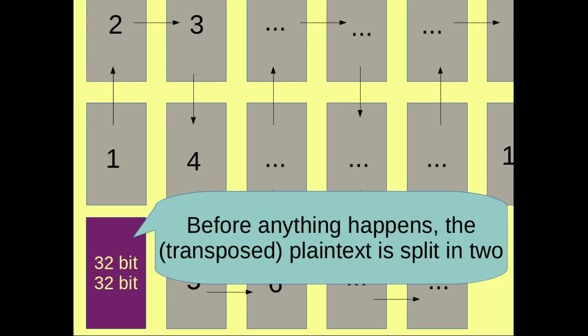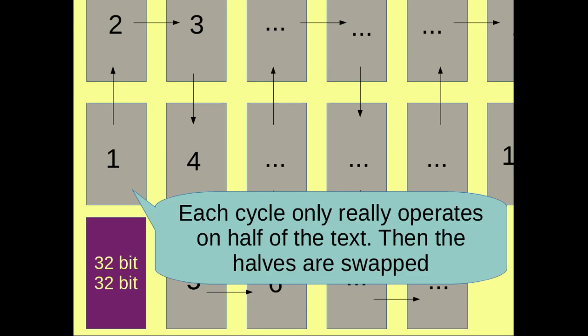First, before anything happens, the transposed plaintext that you're sending in is split into two. So this is the text that you want to encrypt that has been transposed, and that splits into two 32-bit sections. So your 64-bit text becomes two 32-bit chunks. Each cycle only really operates on half of the text and then the halves are swapped. So the first will look at the right half of the text that you're enciphering and the second cycle will look at the left half of the text you're enciphering and so on.